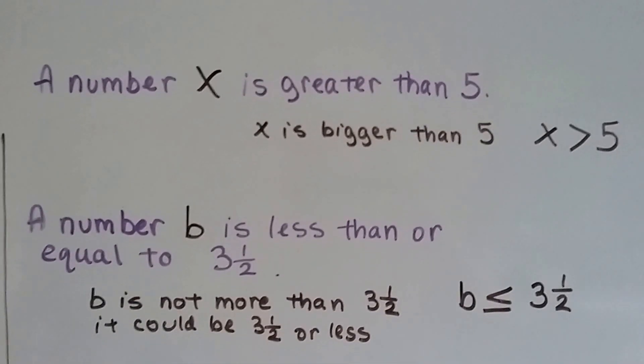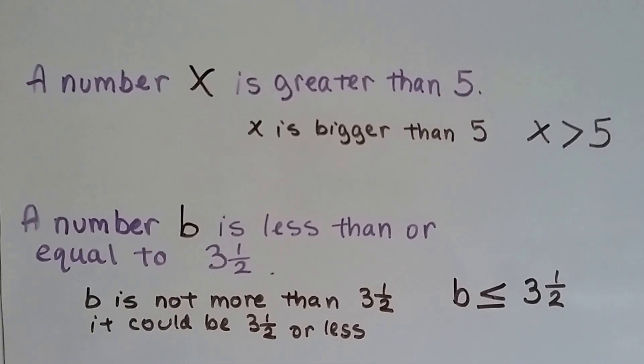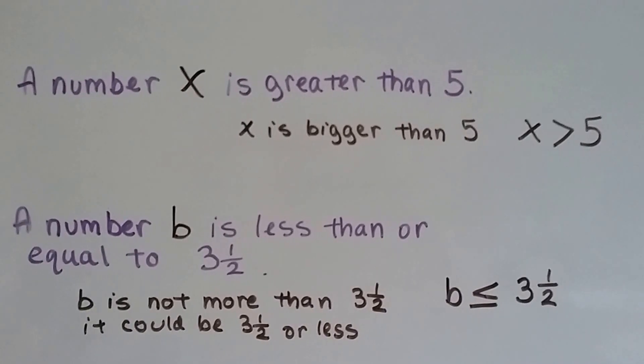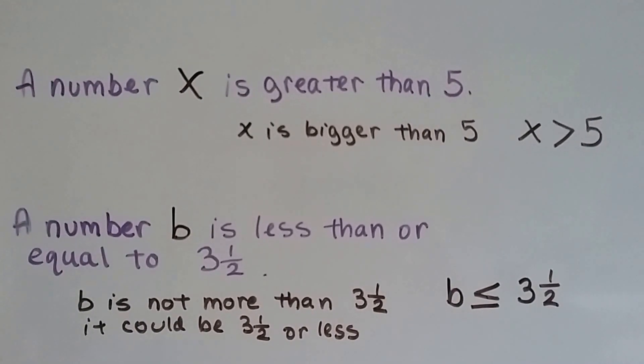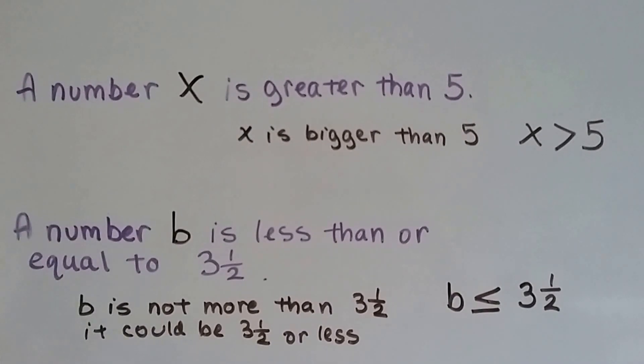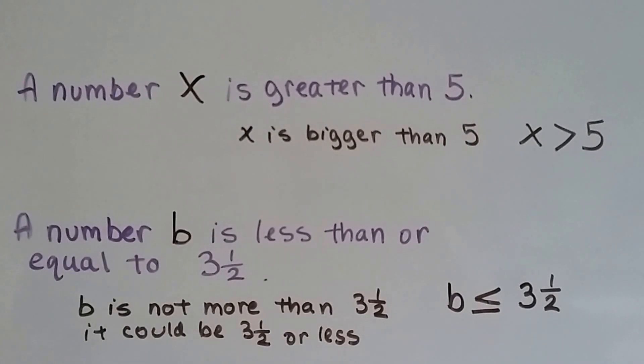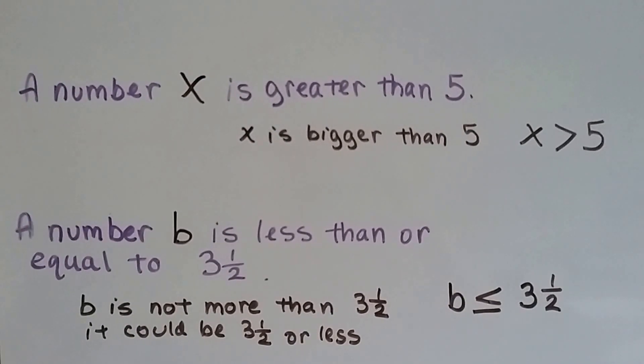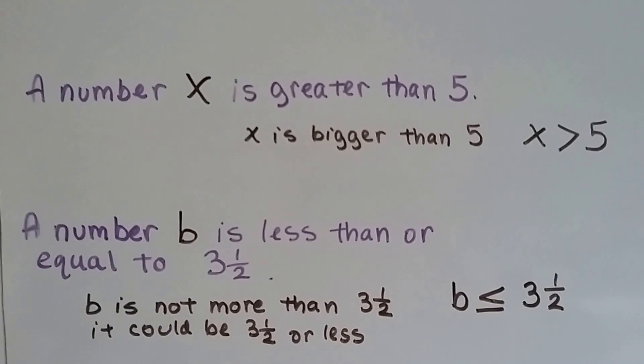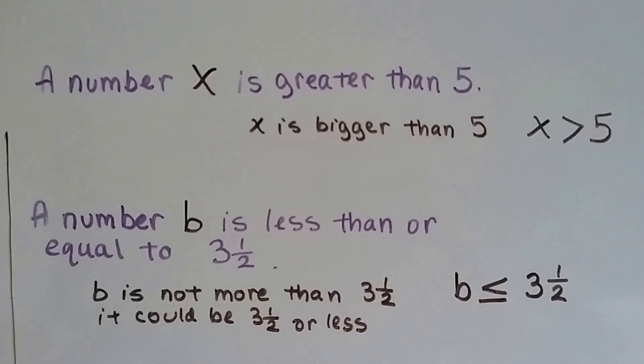What about this one? A number b is less than or equal to 3 and a half. Well, that's just like reading the symbol, isn't it? B is not more than 3 and a half. It's less than or equal to. So, it could be 3 and a half or less. So, we use the less than or equal to sign.